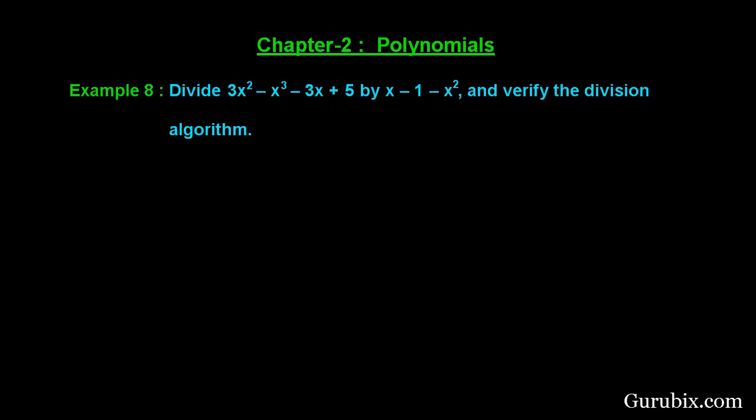Welcome friends, here is example number 8 of chapter 2. The example is as follows: divide 3x squared minus x cubed minus 3x plus 5 by x minus 1 minus x squared, and verify the division algorithm.